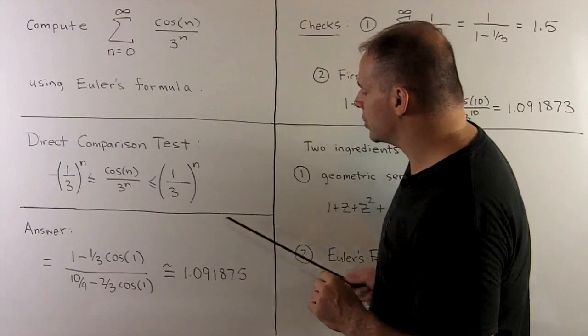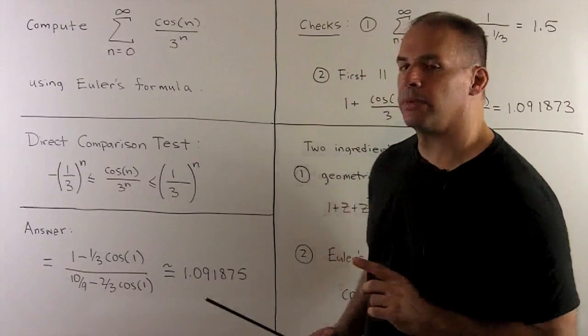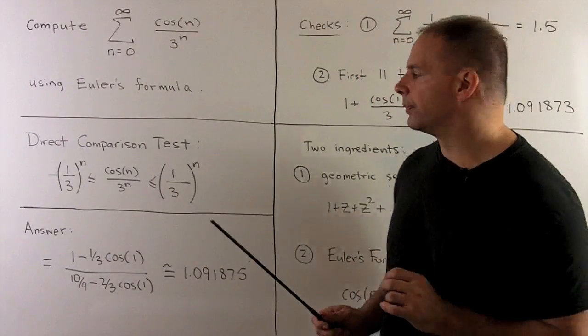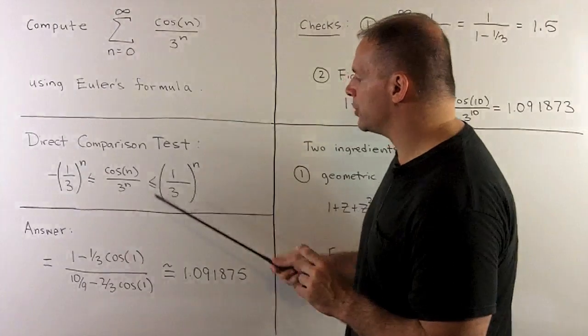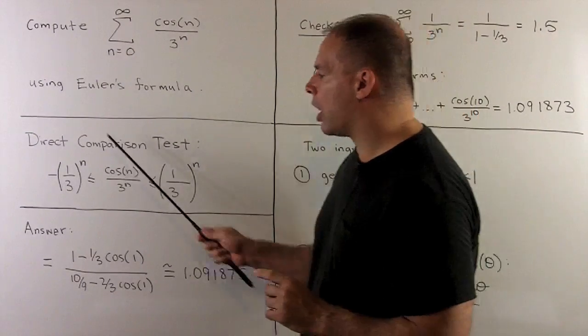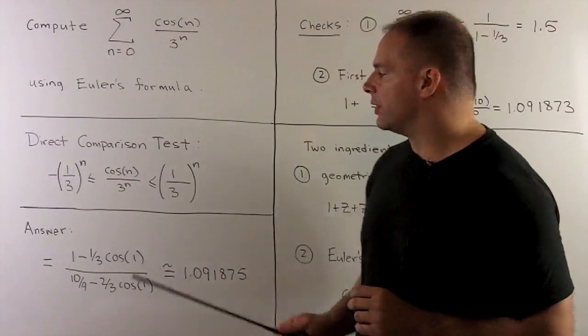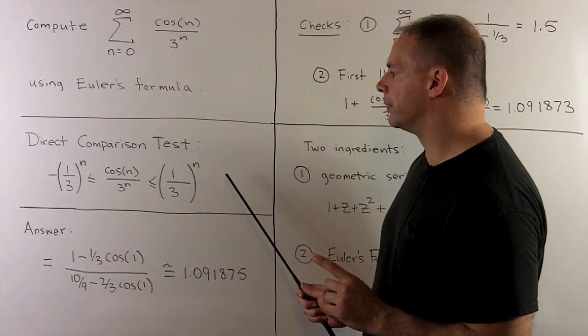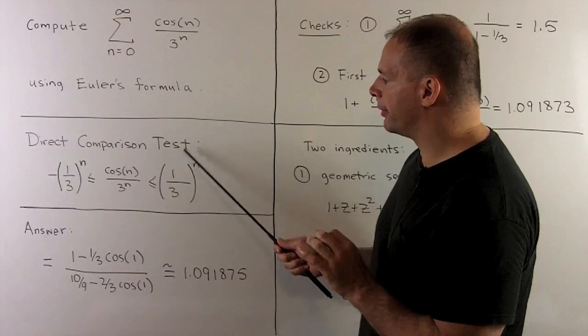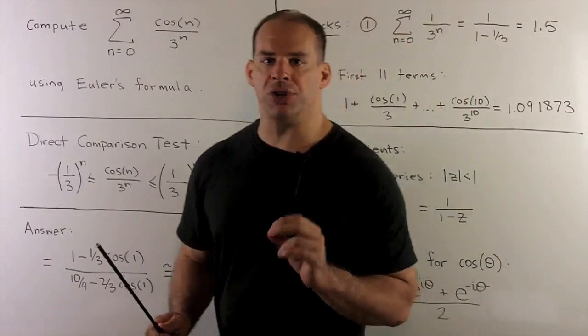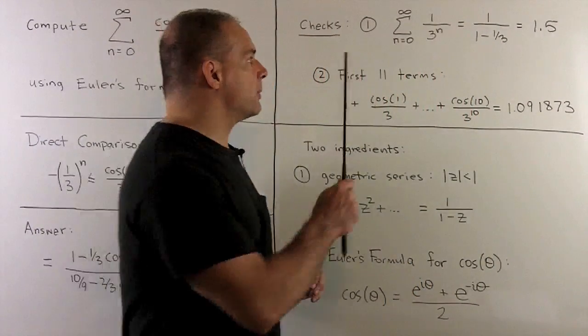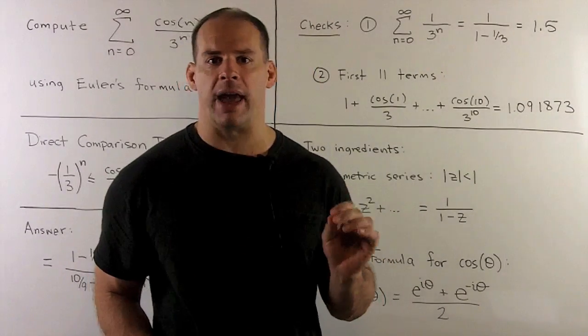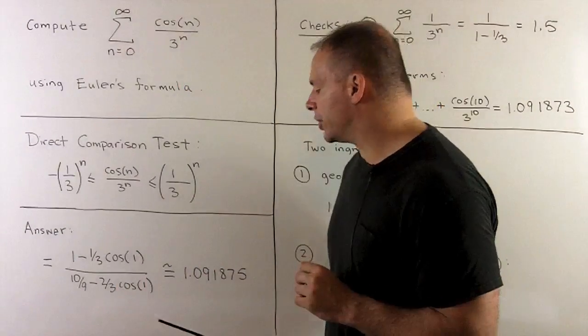So let's just check this with some numbers. For my first check, we'll use our direct comparison test. Now, all the terms on the right are positive, all the terms on the left are negative. So the sum in the middle will be bounded by the sums on the end. If we compute the sum for the right side, our r is equal to 1 third, so the sum is going to be 1 and 1 half. So our sum is between minus 1 and 1 half and 1 and 1 half, and we see that that's going to check out.